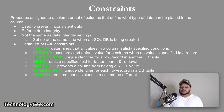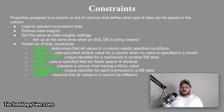Constraints are properties assigned to a column or set of columns that define what type of data can be placed in the column. Constraints are used to prevent inconsistent data and to enforce data integrity. They are set up at the same time when an SQL database is being created. A partial list of SQL constraints includes: check, which determines that all values in a column satisfy specified conditions; default, which uses a provided default value when no value is specified; foreign key; index, which uses a specified field for faster search and retrieval; not null, which prevents a column from having a null value; primary key; and unique, which requires that all values in a column be different.